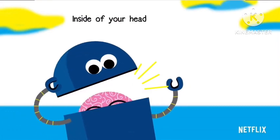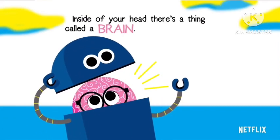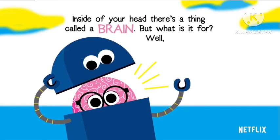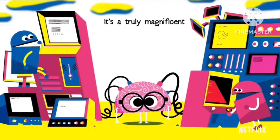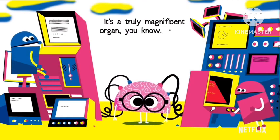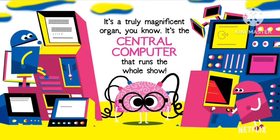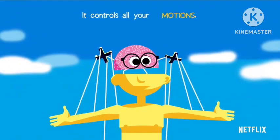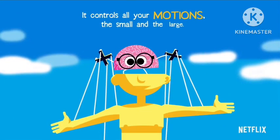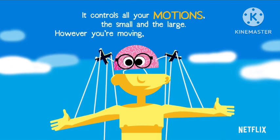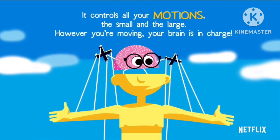The Brain. Inside of your head there's a thing called a brain. But what is it for? Well, I'll try to explain. It's a truly magnificent organ, you know. It's the central computer that runs the whole show. It controls all your motions, the small and the large. However you're moving, your brain is in charge.